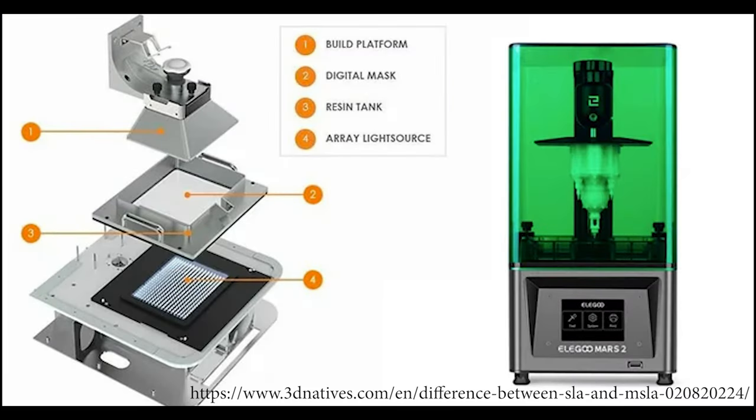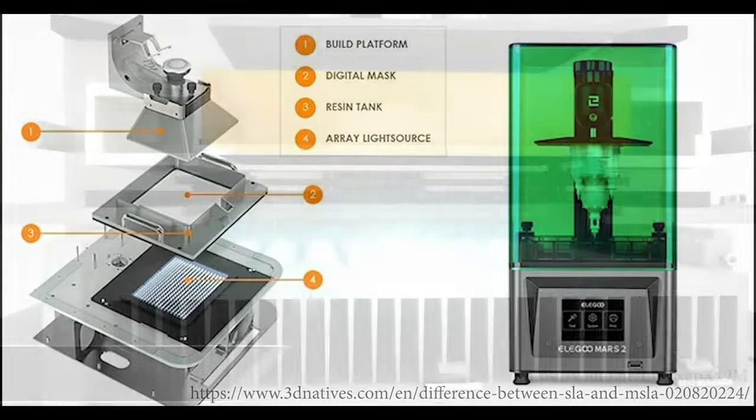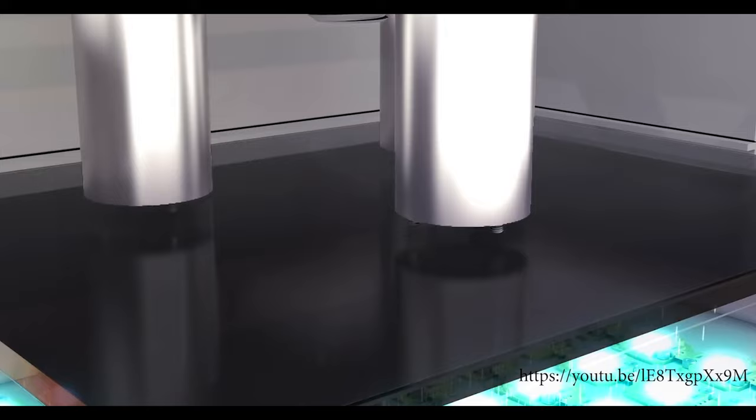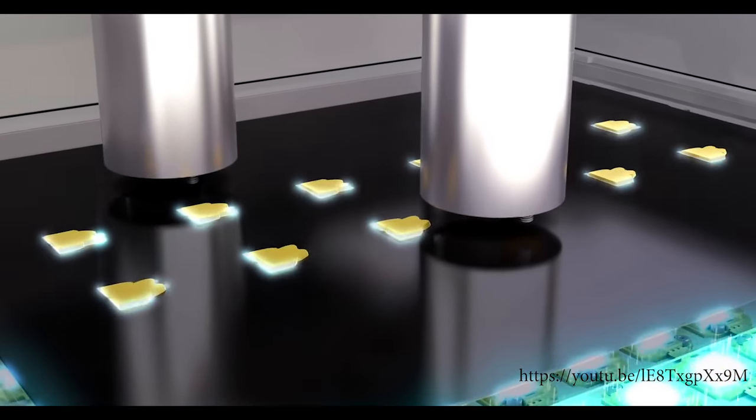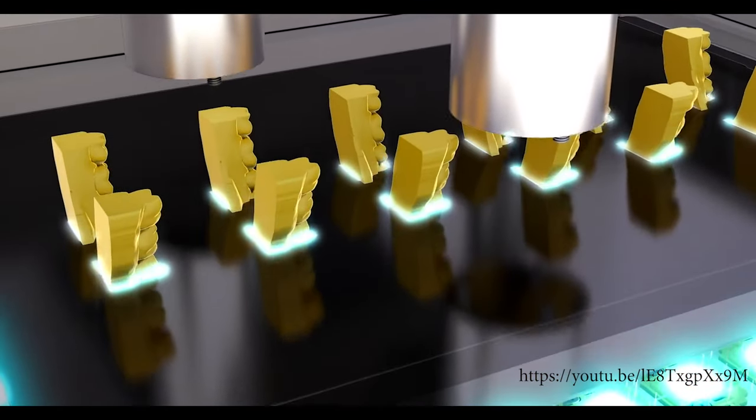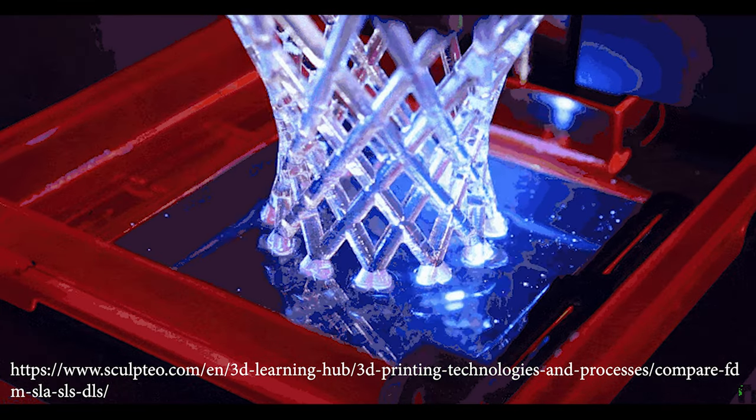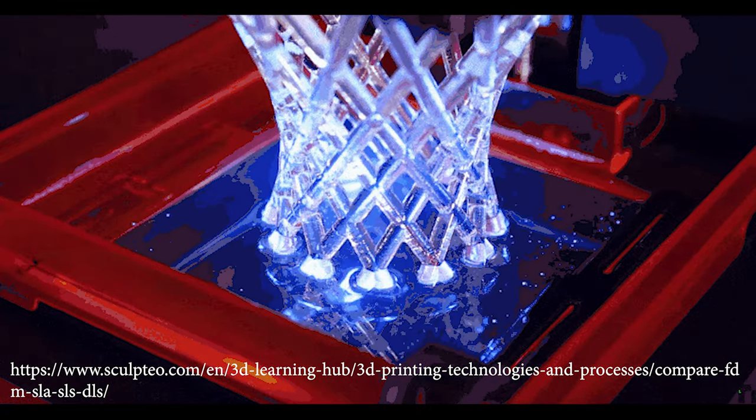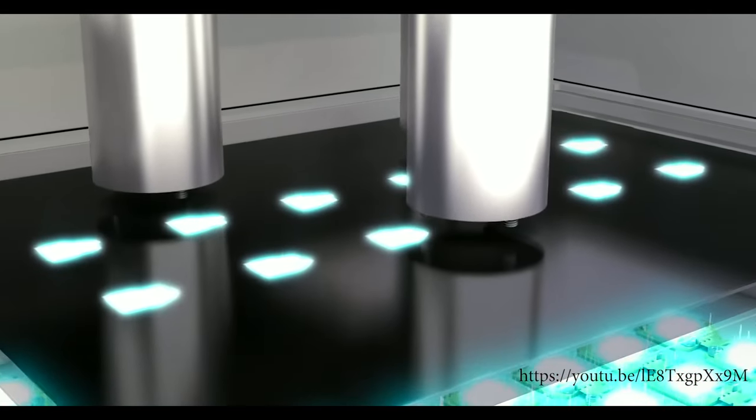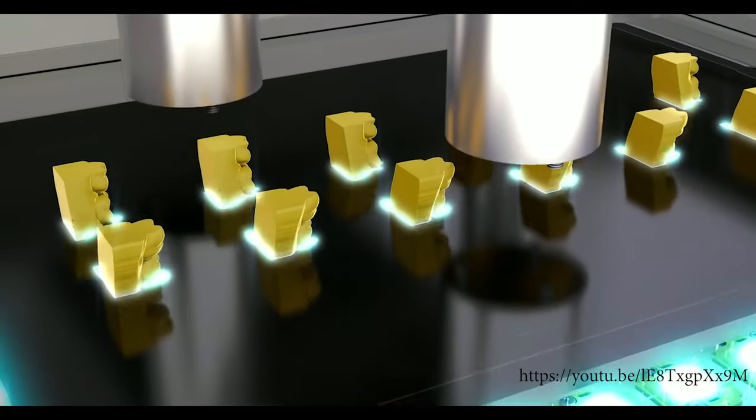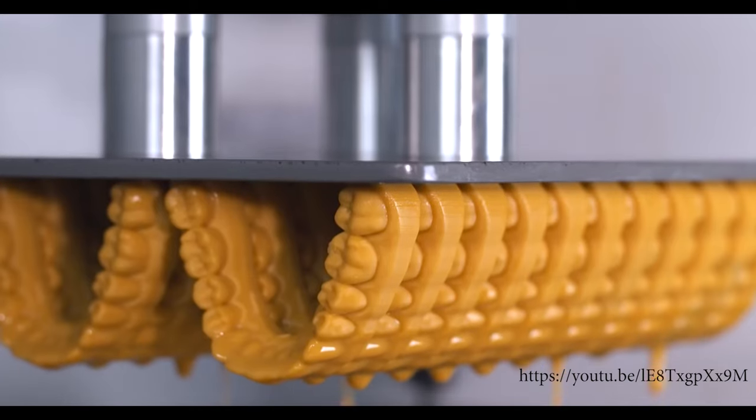It employs a digital mask array of light sources, typically an LCD panel, to selectively expose a layer of liquid resin to light, creating 3D objects layer by layer. Unlike traditional SLA, which uses a laser to trace the shape of each layer onto the resin, MSLA uses the mask to selectively block or allow light to pass through, enabling the entire layer to be exposed at once.